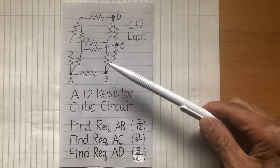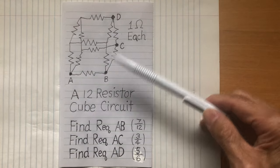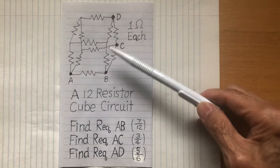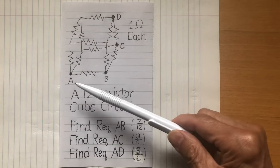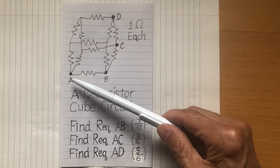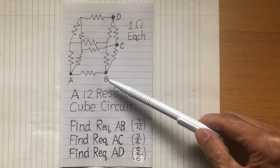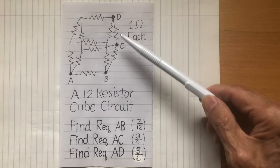Each side is a 1 ohm resistor. I label the corners A, B, C, D.